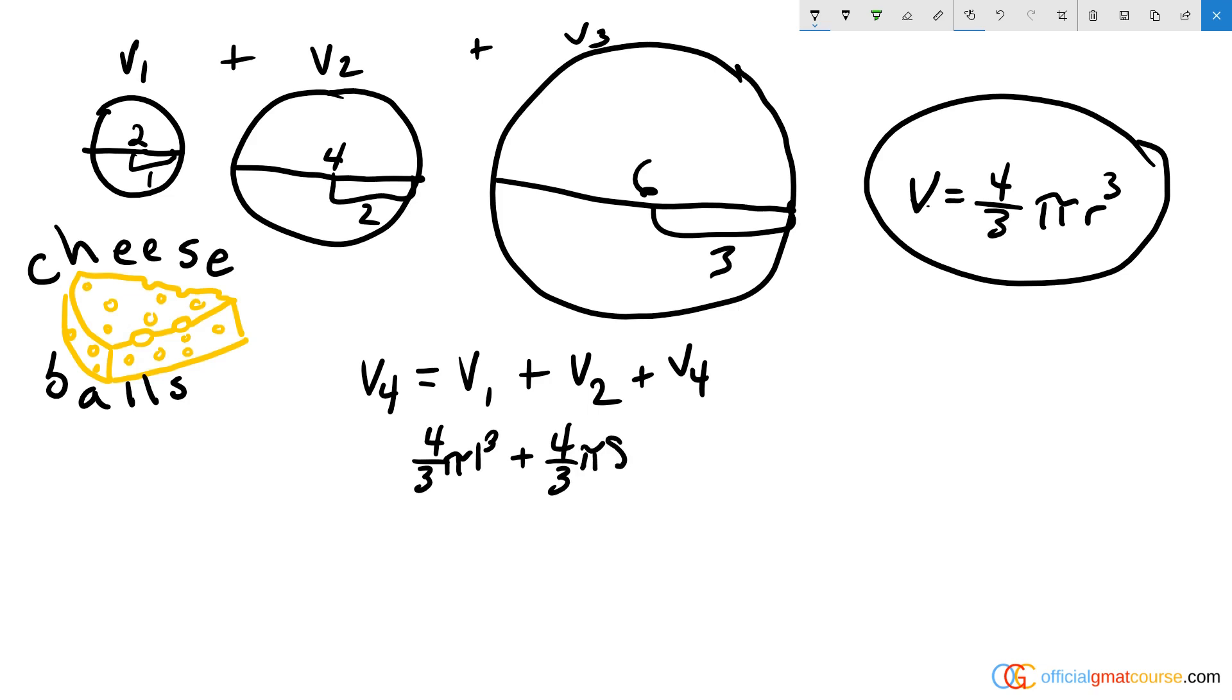plus four-thirds pi times three cubed, which is twenty seven. And when we have addition in between numbers with common elements, and the common element here is four-thirds pi, if we have addition or subtraction we can distribute. So we're going to take one plus eight plus twenty seven, and when we add up the interior here we get nine plus twenty seven, which is thirty six. So we have four-thirds pi times thirty six.